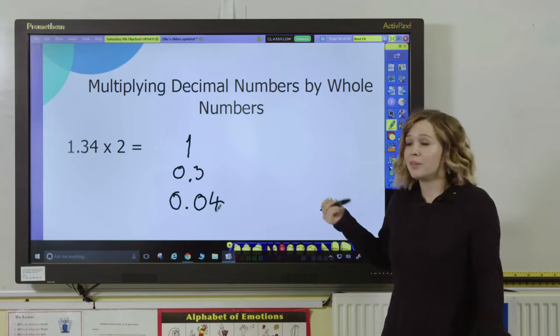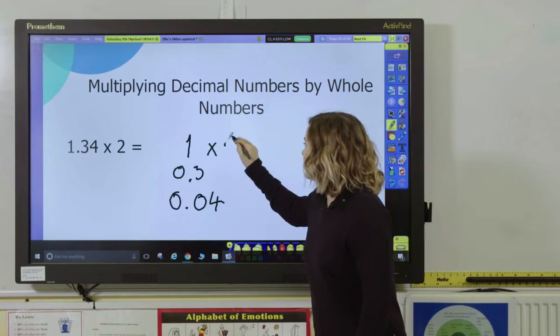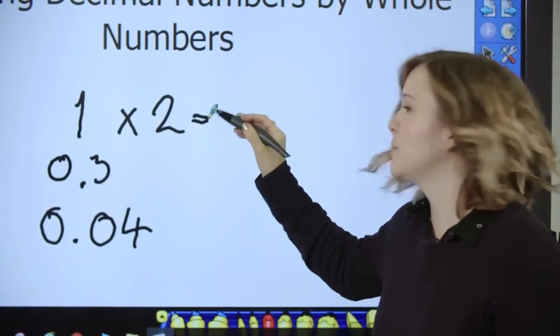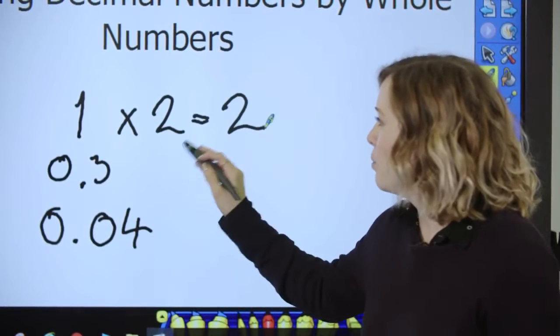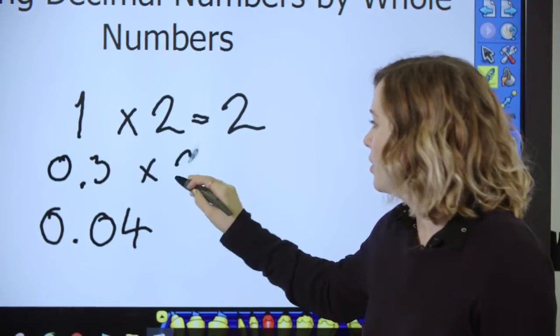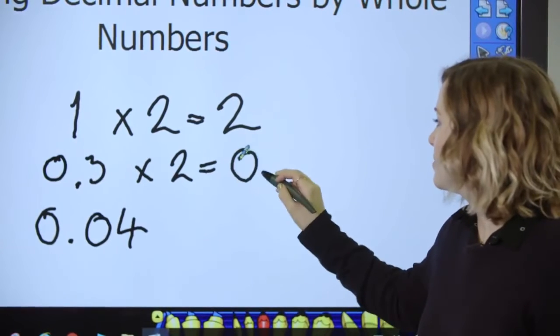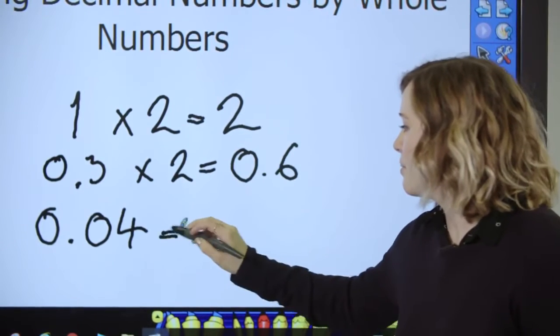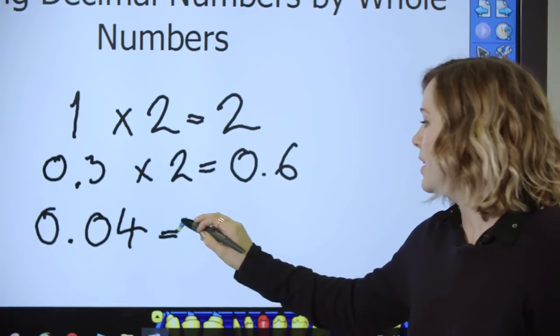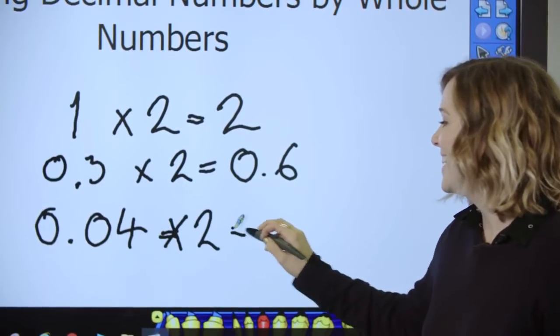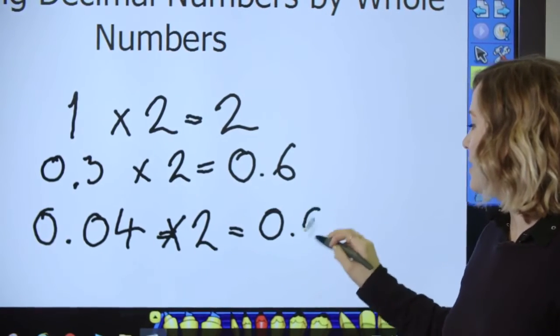Now I'm going to double simply each one. So pupils should easily be able to tell you this: 1 times by 2 is 2, 3 tenths or 0.3 times by 2 gives me 0.6, and my four hundredths multiplied by 2 gives us 0.08.